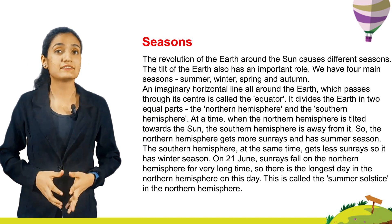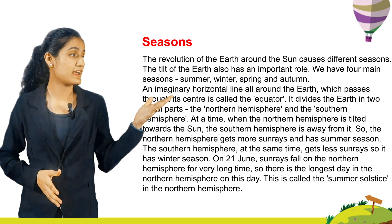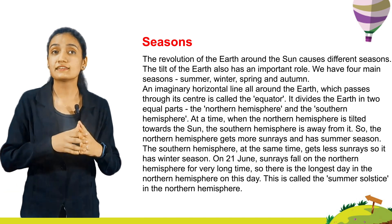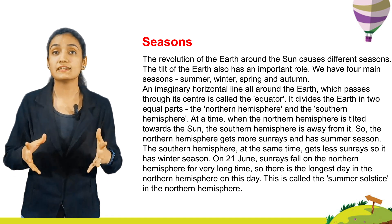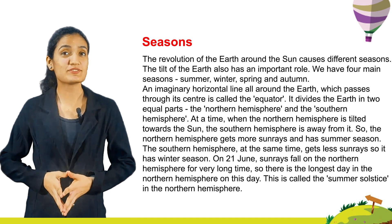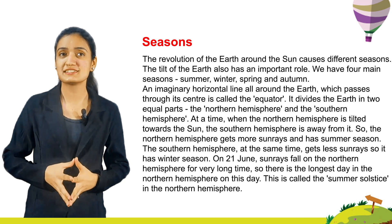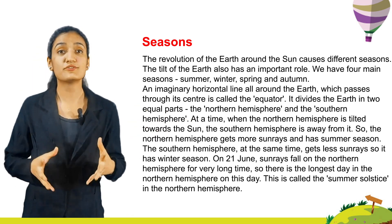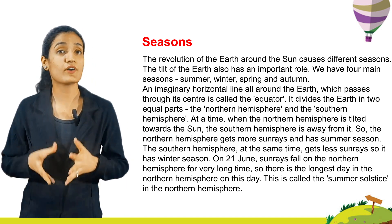The equator divides the earth into two equal parts: the northern hemisphere and the southern hemisphere. At a time when the northern hemisphere is tilted towards the sun, the southern hemisphere is away from it. So the northern hemisphere gets more sun rays and has summer season. On 21st June, sun rays fall on the northern hemisphere for a very long time, so there is the longest day in the northern hemisphere on this day.